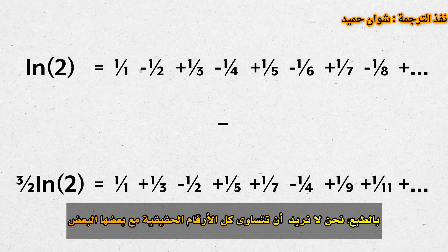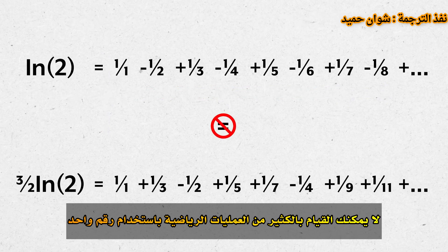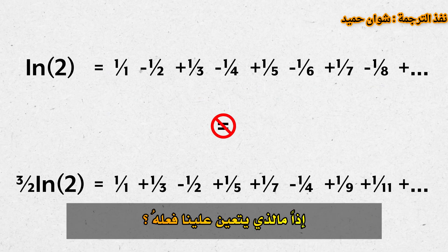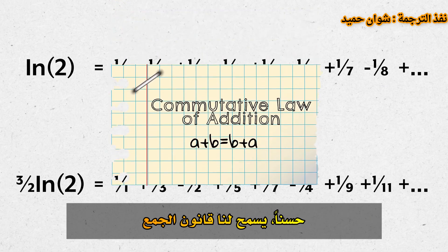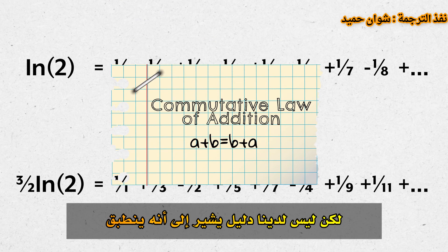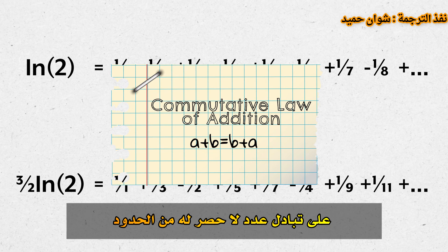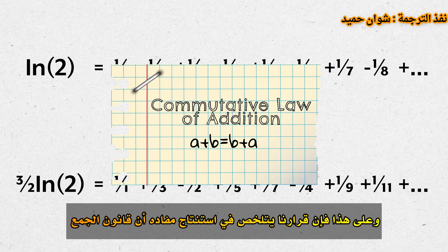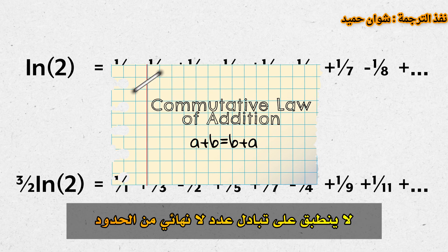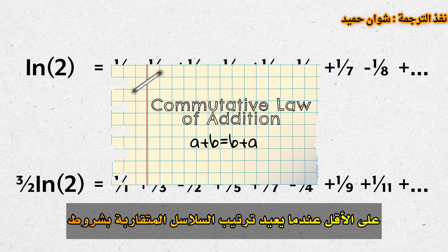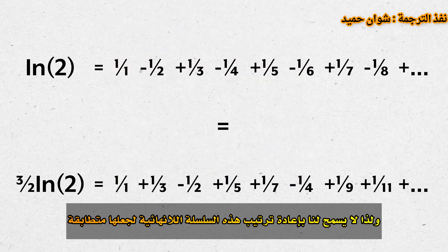Of course, we don't want all real numbers equal to each other — you can't do much math with one number. The commutative law of addition allows us to exchange pairs of terms, but we have no evidence suggesting it applies to the exchange of an infinite number of terms. So our resolution is to conclude that the commutative law of addition doesn't apply to the exchange of an infinite number of terms, at least when rearranging conditionally convergent series. And so, we are not permitted to rearrange these infinite series to make them identical.